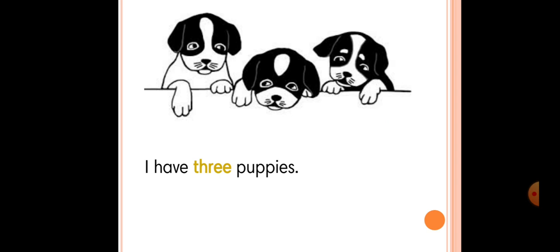I have three puppies. I have already mentioned that shape, size, numbers, and colors are describing words. Here, 'three' is a number, so 'three' is a describing word.